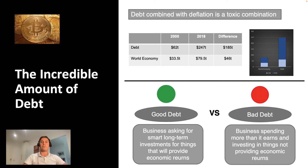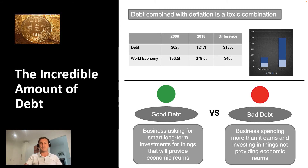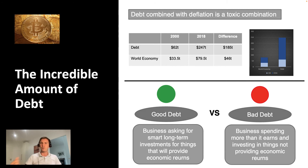Bad debt becomes a weight on future growth as current dollars must be allocated to service interest payments. At some point the weight becomes unbearable and the business is forced to restructure or close, wiping out the debt and harming creditors. In an economy it is the same: an economy can grow faster through credit by pulling demand forward — spending more today at the expense of paying for it tomorrow. Every time we take on debt, we are favoring today over tomorrow.